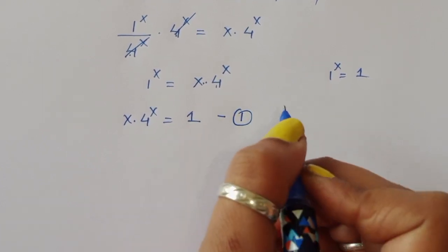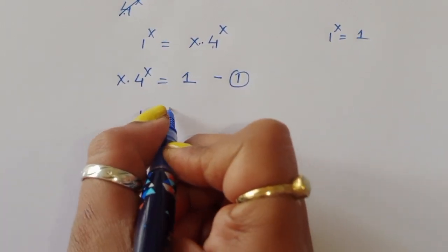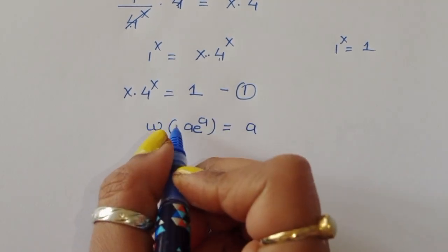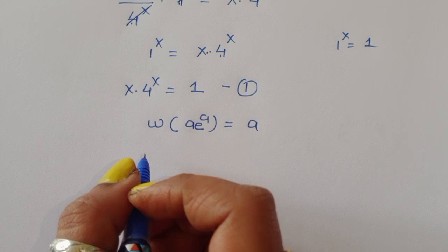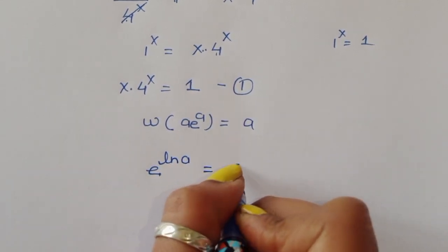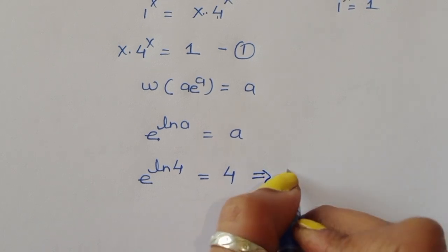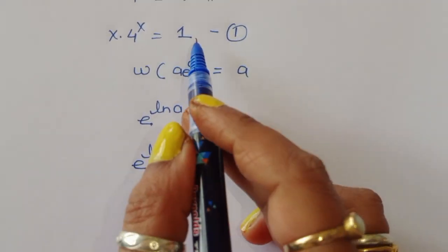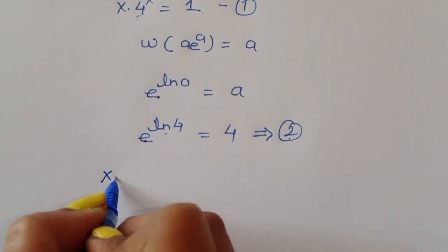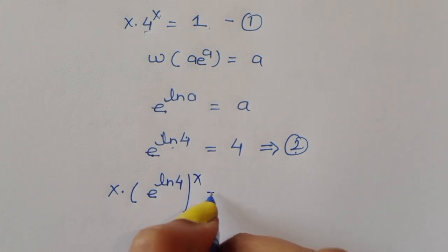Now, according to the Lambert W function, if a^a = a, applying the natural log property we get a^(ln a) = a. So e^(ln 4) = 4. This is equation number 2. We are substituting equation 2 into equation 1, replacing 4 with e^(ln 4).